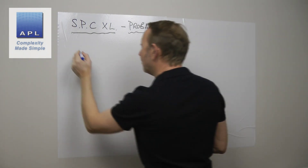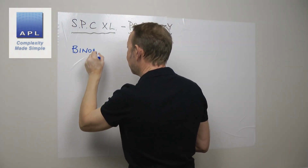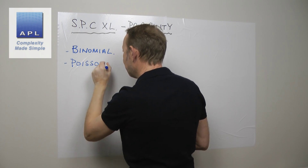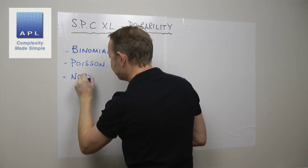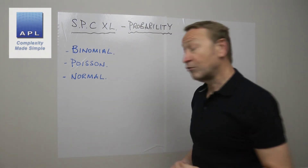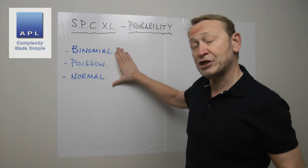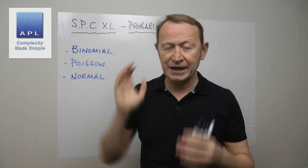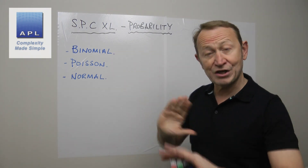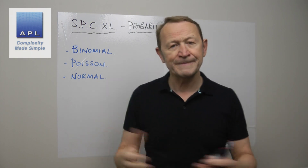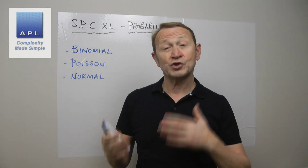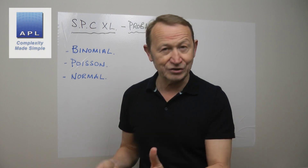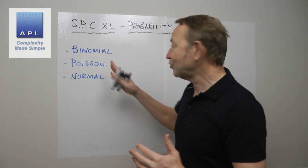The three main probability distributions you get at work are the binomial, the Poisson, and the normal. We're going to cover these three distributions in particular. They are common in every business and also exist when calculating sample size, in hypothesis testing, and in statistical process control.